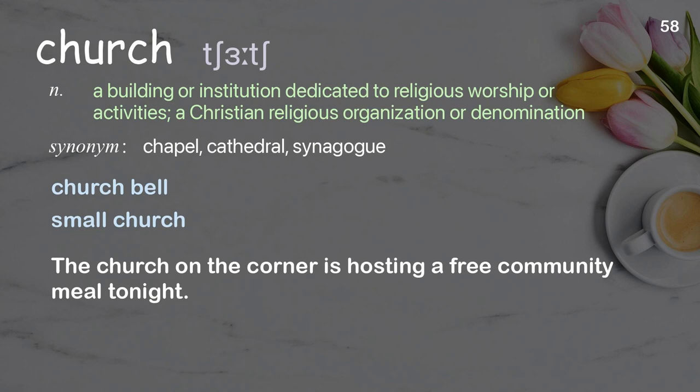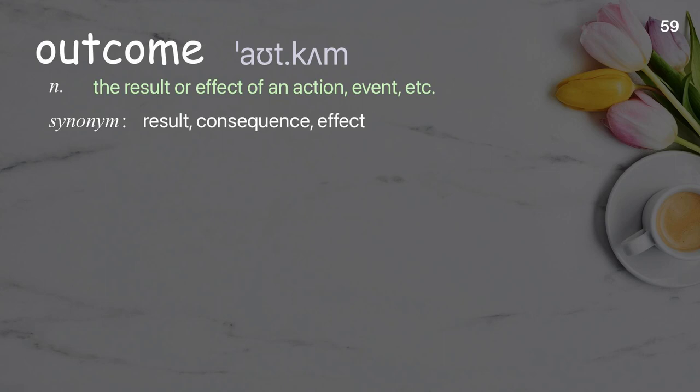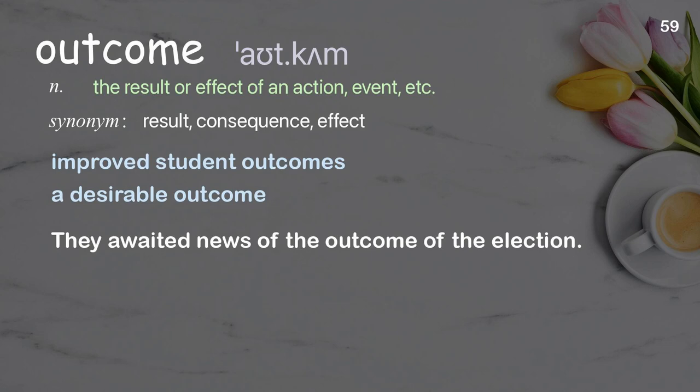Outcome: the result or effect of an action or event. Examples: improved student outcomes, a desirable outcome. They awaited news of the outcome of the election.